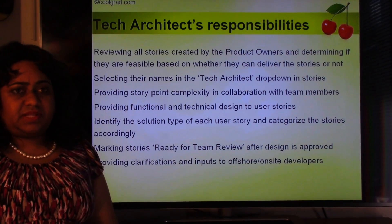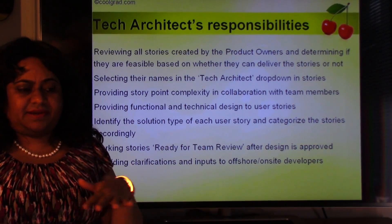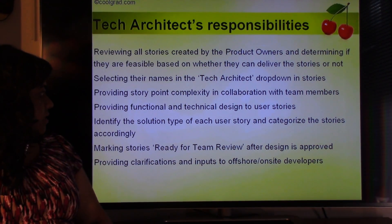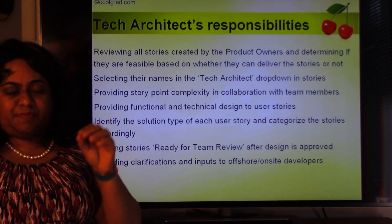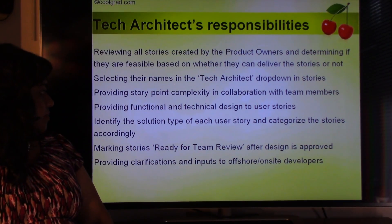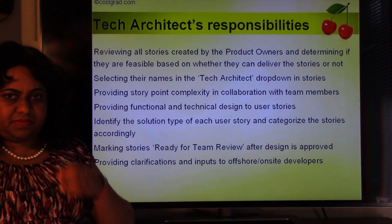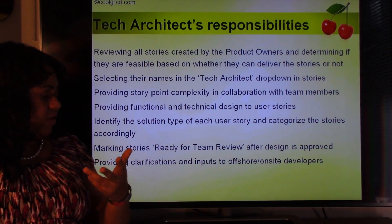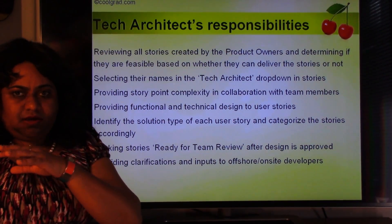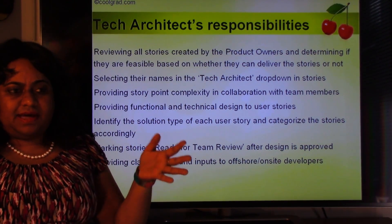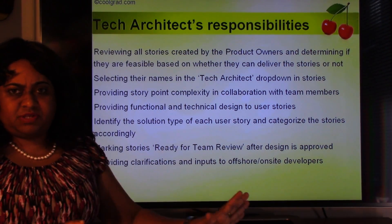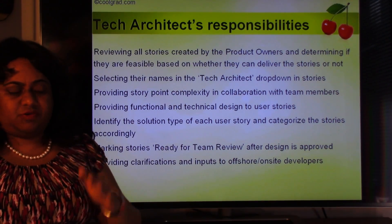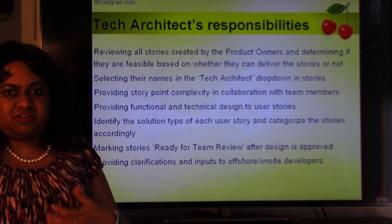Technical Architect responsibilities: A technical architect usually works at the database level and higher, dealing with functional and technical dependencies, and linking systems to each other. In the user story, there is a 'Technical Architect in Charge' dropdown where they pick their name. They provide functional and technical design for user stories, designing how each story must be solutioned. Once all details are populated during grooming — business requirements, acceptance criteria, system-level specifications, and architectural details — the technical architect says it is ready for team review. After team review is done, the BSA marks it 'team review done.' The technical architect provides clarifications on all technical issues to the resources.